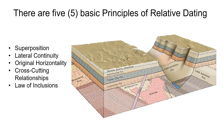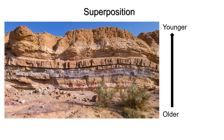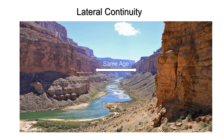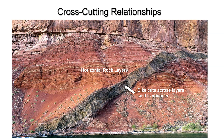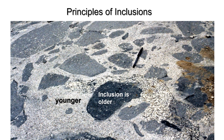Going through each of these principles: superposition — younger on top, older on bottom; lateral continuity — layers on opposite sides of a gap are the same age; original horizontality — layers were laid down horizontally and then tilted; cross-cutting — the dike cuts across so it is younger than the horizontal rock layers; and finally, the law of inclusions — the inclusion is older than the rock that it is incorporated into.